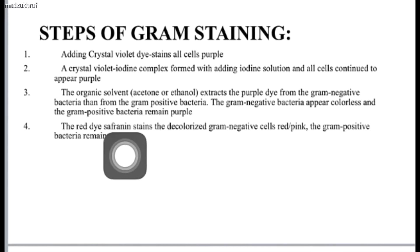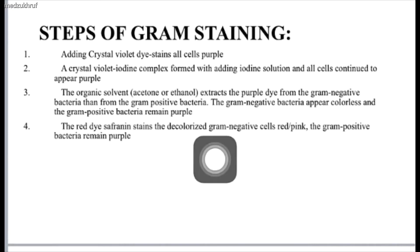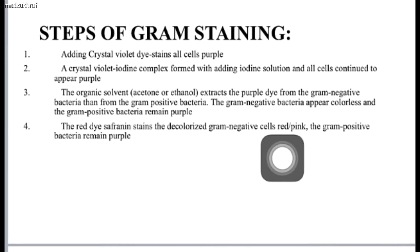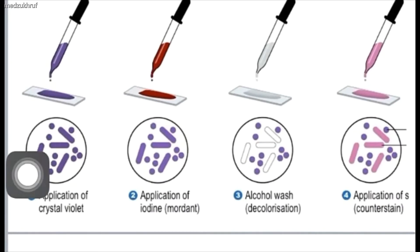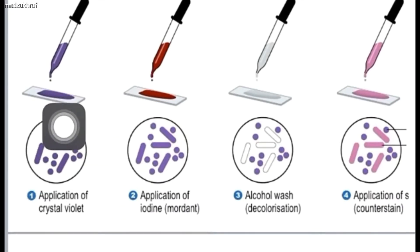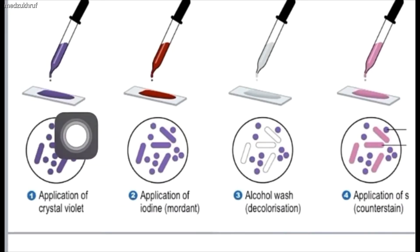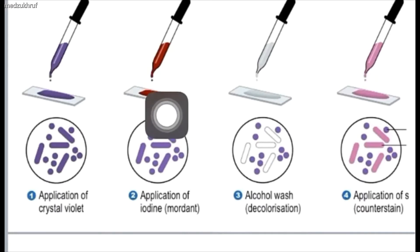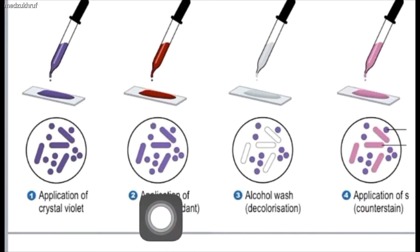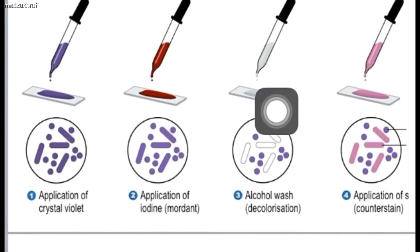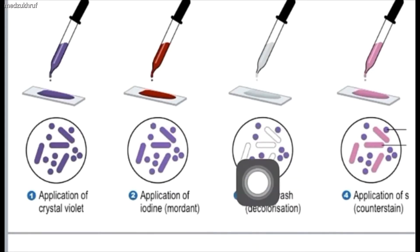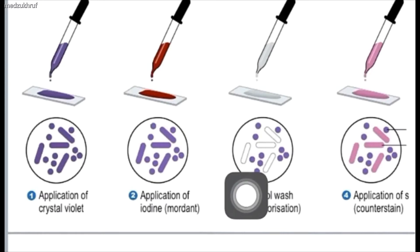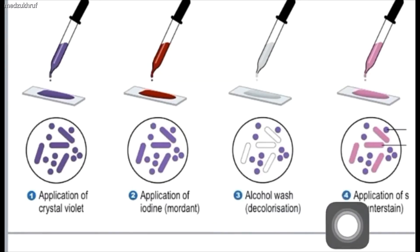At the end, we add a safranine dye as a counterstain to stain the gram negative bacteria red or pink, while gram positive remain purple. In the procedure shown here, we applied the crystal violet dye on the bacteria on the slide, then applied iodine to form the crystal violet-iodine complex, then washed with an organic solvent such as alcohol to decolorize. In this circular picture you can see gram negative bacteria are decolorized while gram positive are purple.